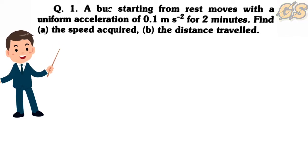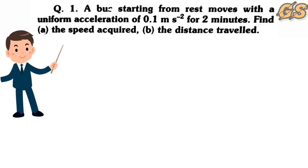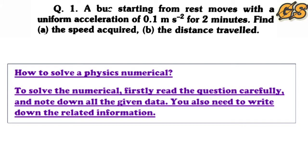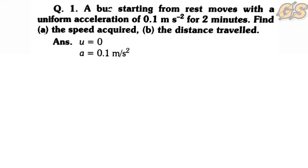The bus starts from rest with a uniform acceleration of 0.1 m/s² and moves for 2 minutes. The most important thing to solve numericals is to write down what is given. Since it starts from rest, the initial velocity u = 0, acceleration a = 0.1 m/s².